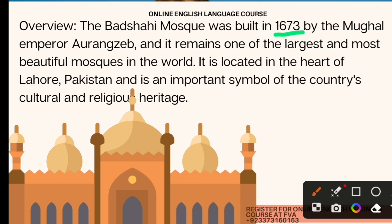Aurangzeb was an emperor of the subcontinent, when India, Pakistan, and Bangladesh were all joined together in a region called the subcontinent. Emperor Aurangzeb ordered the construction of this mosque, called the Badshahi Mosque — or in Urdu, 'Masjid.' It remains one of the largest and most beautiful mosques in the world, located in the heart — meaning the center — of Lahore, Pakistan.